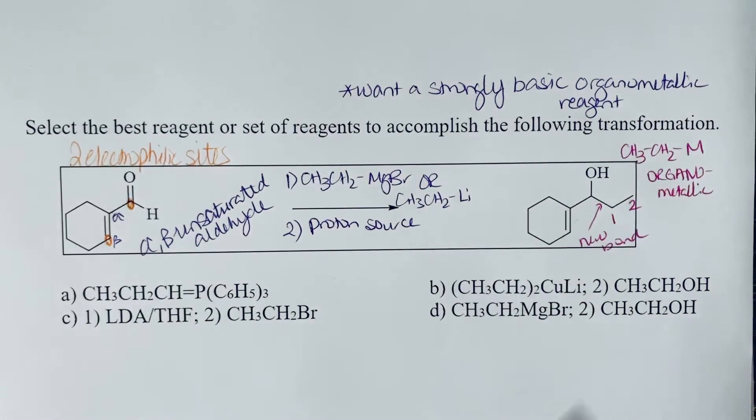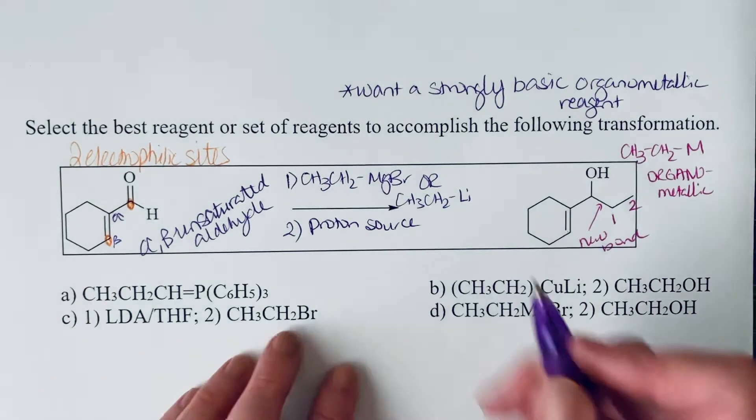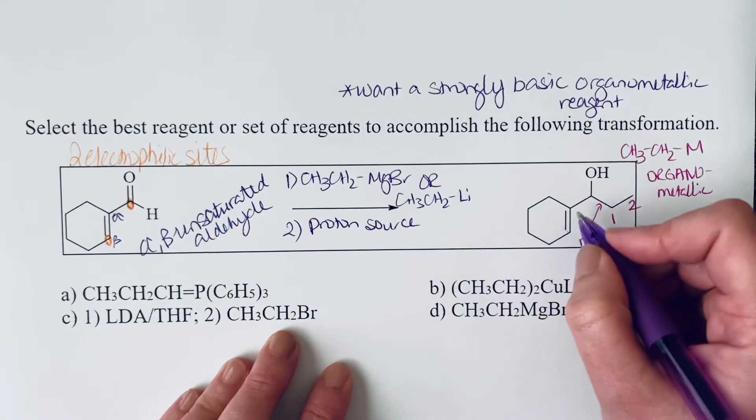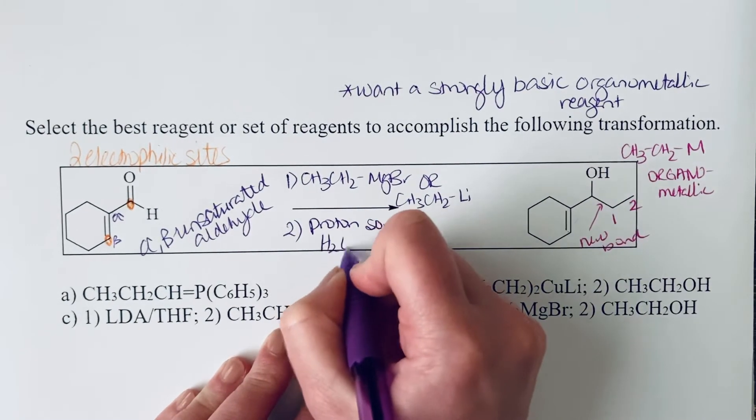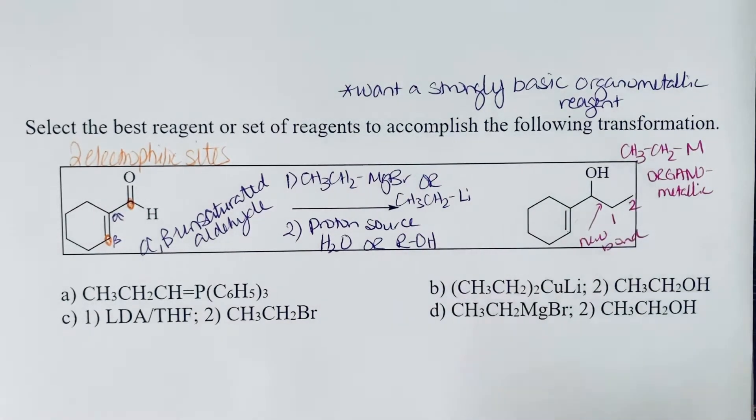And oftentimes, because we have the alkene here, and this could react if we had aqueous acid, we might just use water or even a neutral alcohol. So you might see small alcohols like methanol or ethanol being used there.